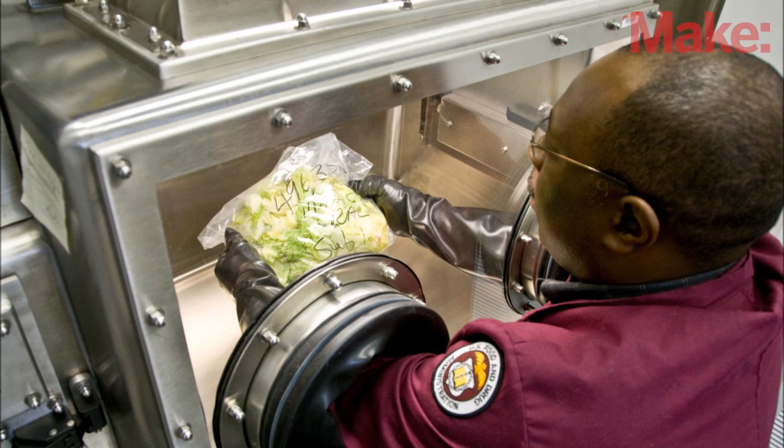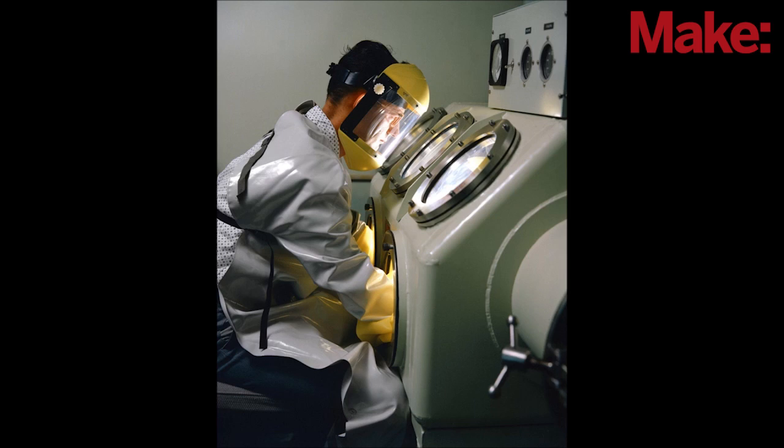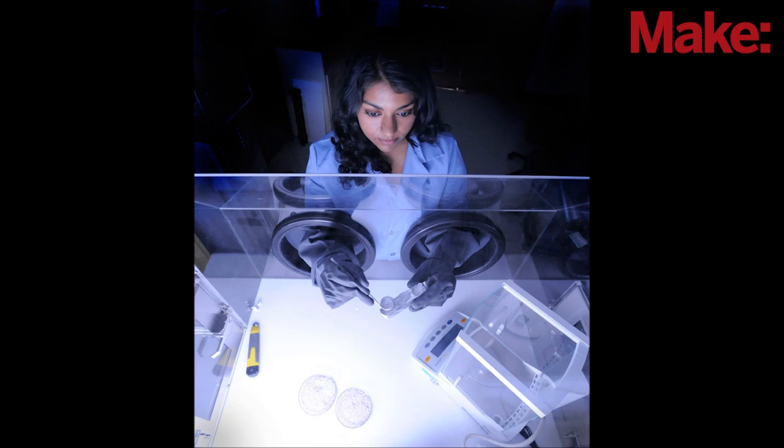A glove box is a piece of safety equipment that lets you perform work on an object while keeping it in isolation. It's most commonly used to protect operators working with hazardous materials, but it can also be used to protect sensitive materials from the outside atmosphere.